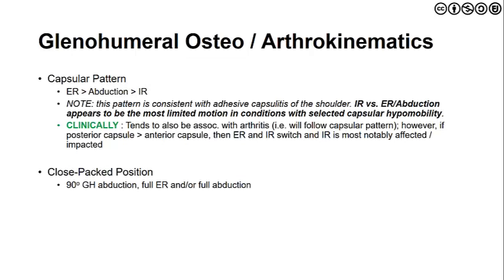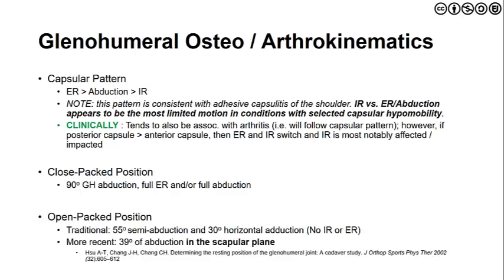The closed pack position is 90 degrees of glenohumeral abduction with full external rotation, or full abduction — essentially the throwing position. The open pack position is up for debate; initially thought to be 55 degrees of semi-abduction and horizontal adduction, but more recently Sue, Chang and colleagues in JOSPT 2002 identified it is probably closer to 30 to 40 degrees of abduction in the scapular plane with neutral internal/external rotation.